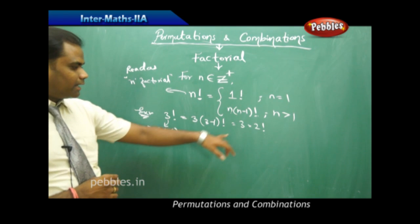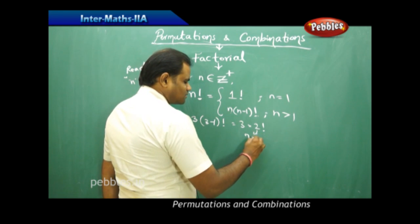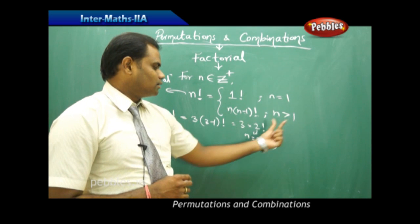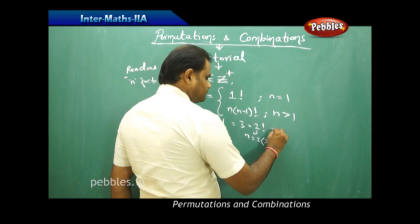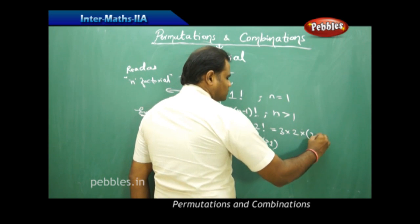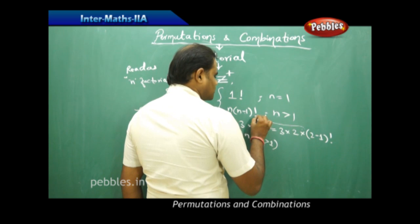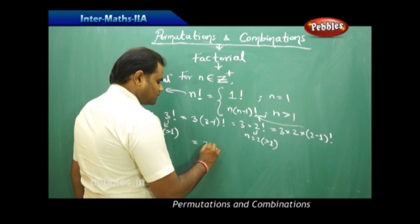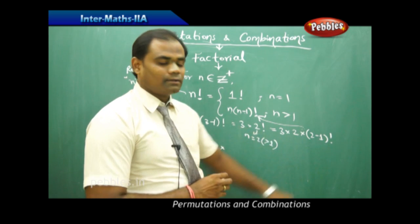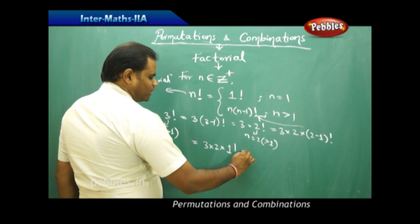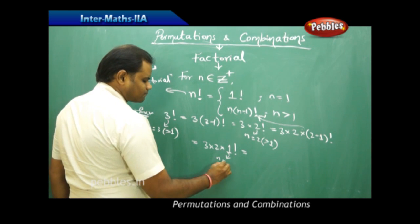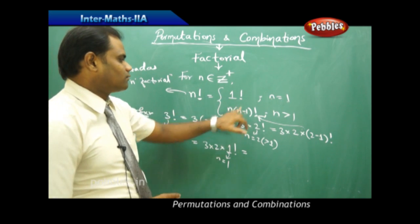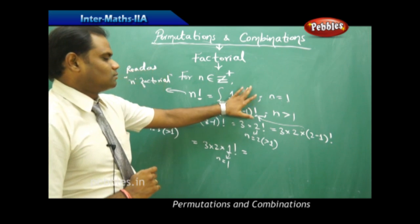Since n is now 2, which is also greater than 1, I again apply the second case: 3 factorial becomes 3 times 2 times (2 minus 1) factorial, which is 3 times 2 times 1 factorial. Since n equals 1, I use the first case: 1 factorial equals 1.